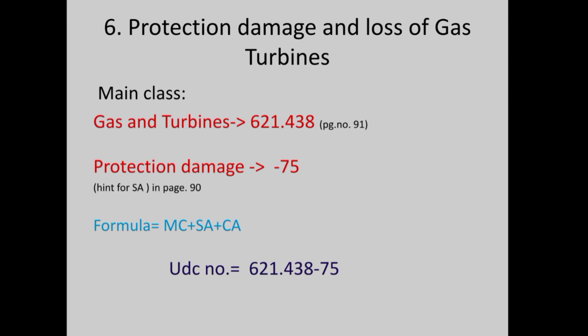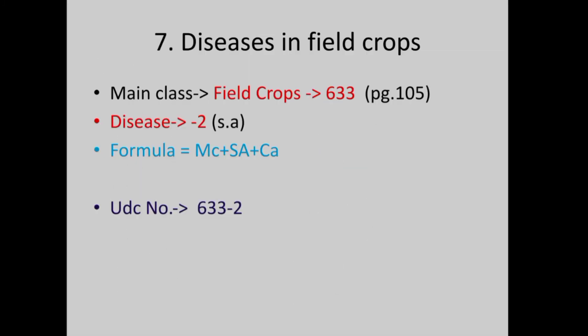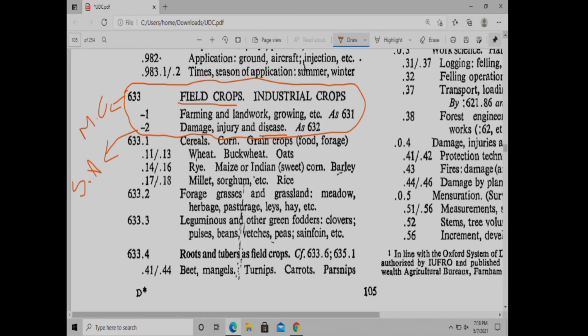Next: Disease in Field Crops. Field crops — what disease? Check the main class number in the index. If you are going in special auxiliaries, check 633. Find the section of field crops and industrial crops. You will need to check out the word DISEASE. Disease is 633-2.